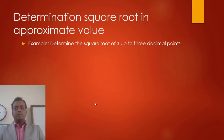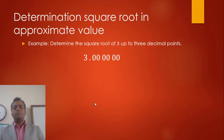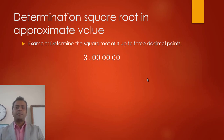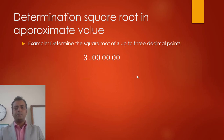Now, determination of square root in approximate value. As an example, we have to find the square root of 3 up to 3 decimal points. Since we need the square root up to 3 decimal points, we take 3 pairs of zeros after the decimal point. If you need to find the square root up to 5 decimal points, you take 10 digits after the decimal point — it is always double the number of expected digits in the square root.